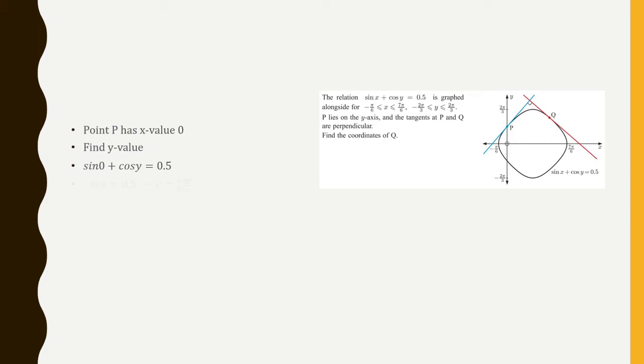x is zero, so sine of zero is zero. So we're left with cosine of y is one-half. So if I solve for y, I either get pi over three or two pi over three. Actually, there's infinite number of solutions, but you have to use common sense here. And notice that two pi over three is all the way up here, so it makes sense for P to be pi over three.